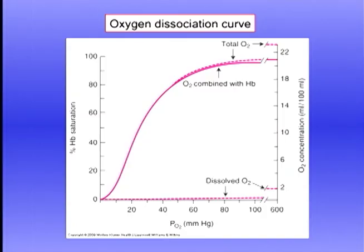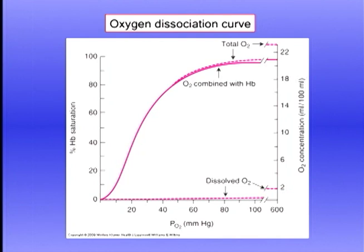Let's start by looking at the arterial PO2, because all patients with respiratory failure have severe hypoxemia. Let's look first at the oxygen dissociation curve. The important feature, as far as we're concerned, is that the upper part of the oxygen dissociation curve is relatively flat, so that we can actually drop the arterial PO2 from the normal value of 100 down to say 60, and the arterial oxygen saturation is still about 90 percent.